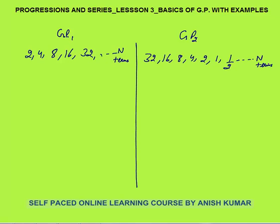Here I have taken two geometric progressions. The first is 2, 4, 8, 16, 32. In this, the first term A is 2. The common ratio is the 2nd term by the 1st term — that is 4 by 2, or 8 by 4 — which equals 2. So in this GP, the first term is 2 and the common ratio is also 2.